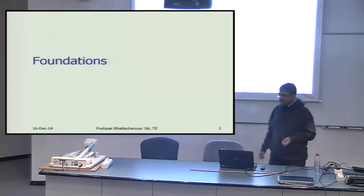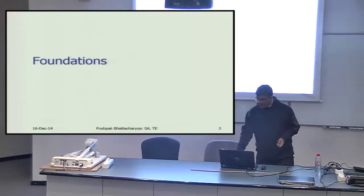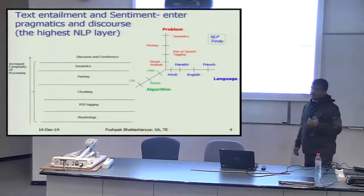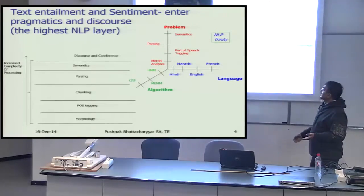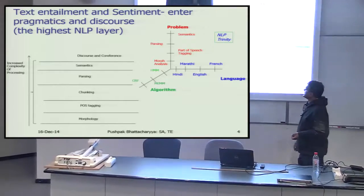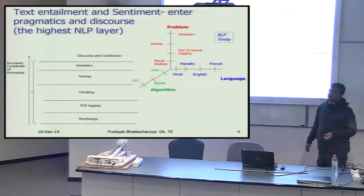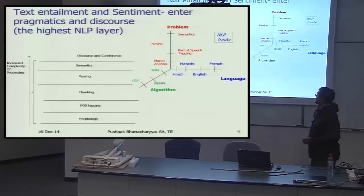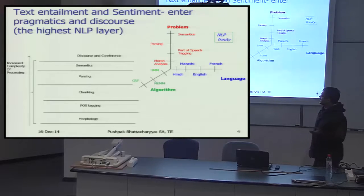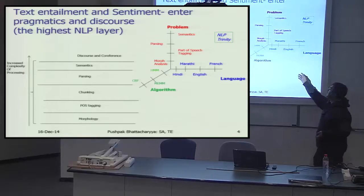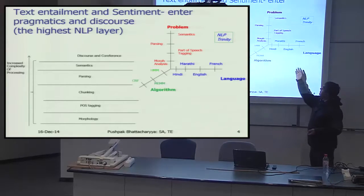Now for text entailment, we would like to go to some foundational questions. Text entailment and sentiment analysis are really at the highest level of natural language processing. Once we have built all the basic NLP tools and resources, we can think of doing text entailment, sentiment analysis, and so on. The entailment problem can be for multiple languages — all languages have the need for text entailment and different algorithms have to be designed.